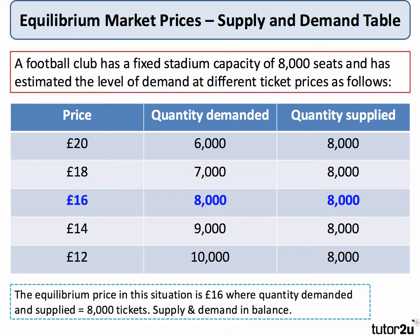At £14, demand would be 9,000 but the stadium capacity is only 8,000, so there is excess demand. At a ticket price of £18, the stadium capacity is still 8,000 but quantity demanded would fall to 7,000, leaving 1,000 unsold seats in the market.